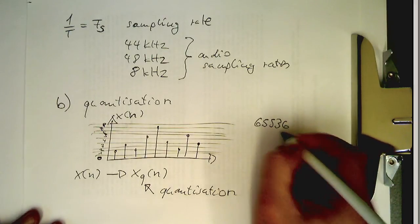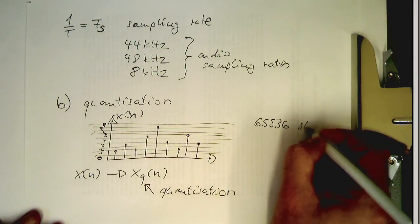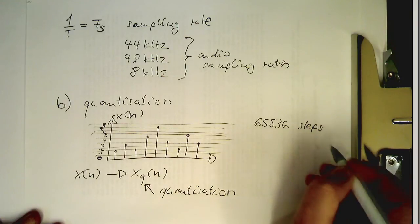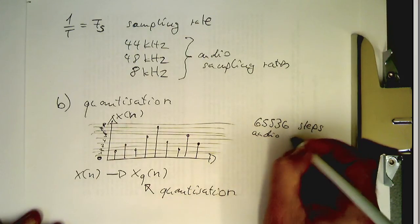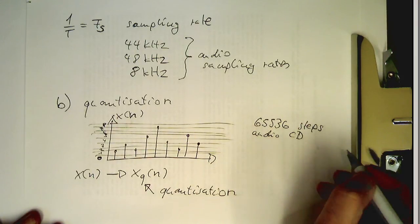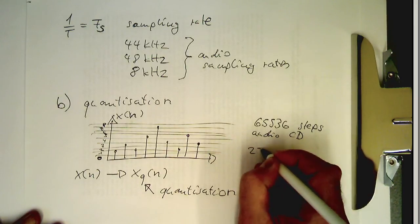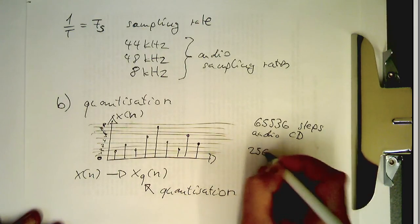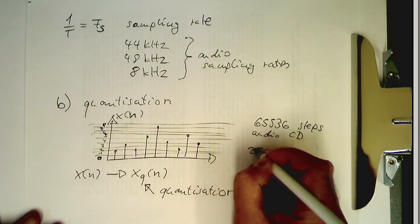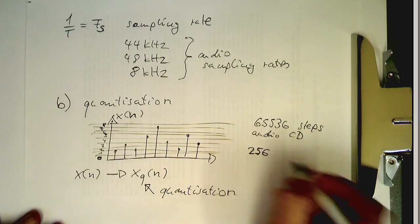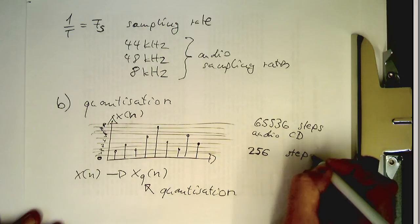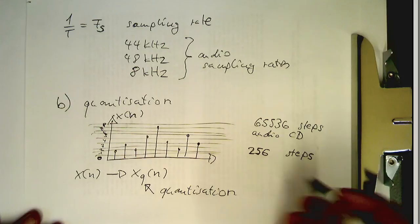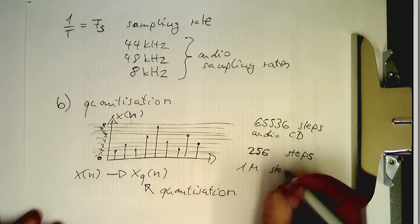65,536, that's classic steps. And this is used for example for audio CD to code music. Again, if you have low quality audio signal where there's no real reproduction or faithful reproduction required you can also live with 256 steps. And then in studio applications we have 1 million steps.